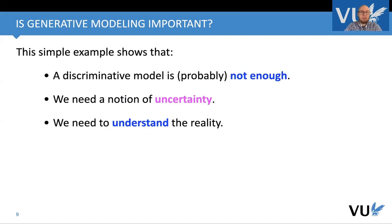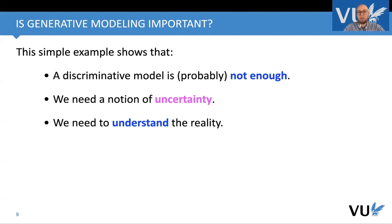So now there is a question: is it enough to train a discriminative model — a neural network classifier? Well, probably this is not enough. Moreover, we need some kind of notion of uncertainty. It means that maybe we should weight, in a probabilistic sense, how probable or how likely a given object is. And also, we definitely need to understand the reality. This is somehow an additional constraint we should impose on our models. This is a very difficult question, but these are points that can help us build better models.